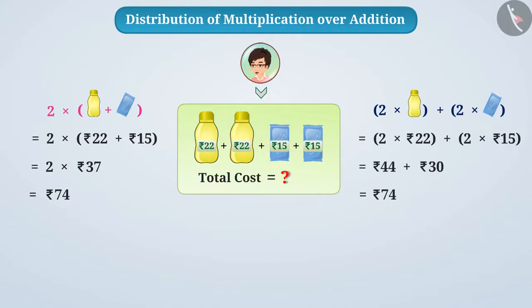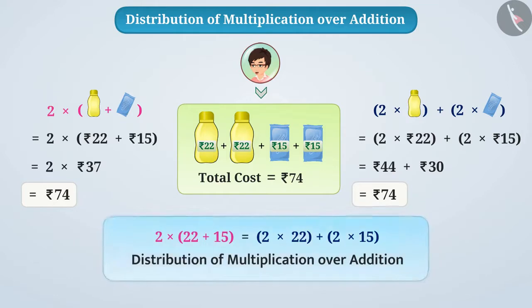In both cases, you will get the same result. We can say that 2 multiplied by 22 plus 15 is equal to 2 multiplied by 22 plus 2 multiplied by 15. Here the distribution of multiplication over addition is done.